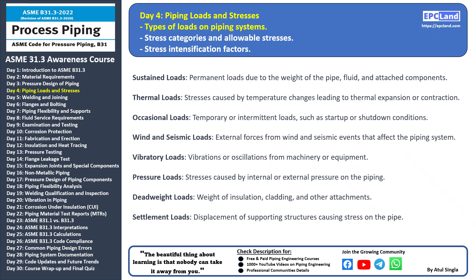Occasional loads are temporary or intermittent loads that occur during specific situations such as system startup or shutdown, and they can impact the piping system differently than sustained loads. Wind and seismic loads are external forces from wind and seismic events that can exert pressure on the piping system — designing for these loads is essential to ensure the system's stability. Vibratory loads from vibrations or oscillations from machinery can affect the piping system, and managing them is crucial to prevent fatigue and failure.